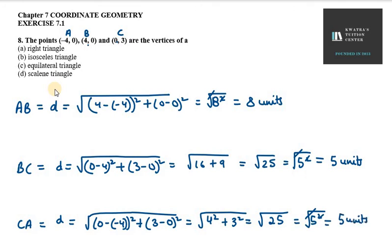We can clearly see that BC and CA are both equal to 5 units. When two sides are equal, this means we have an isosceles triangle. So the correct option is B. Thank you for watching — please like, share, and subscribe.